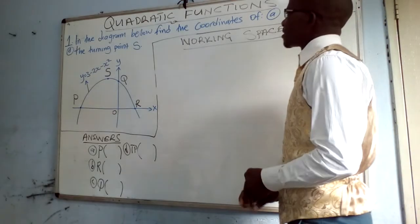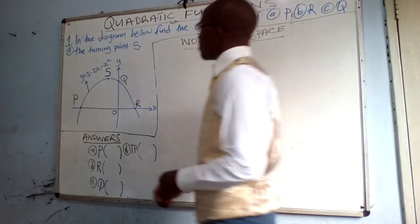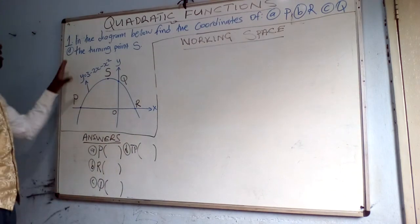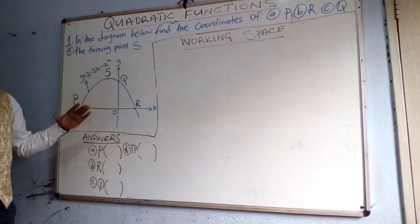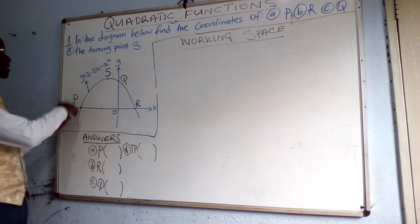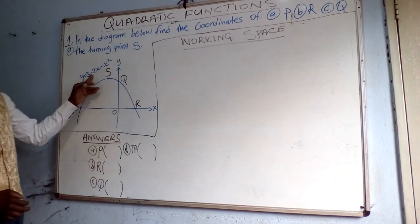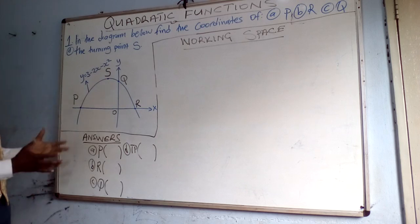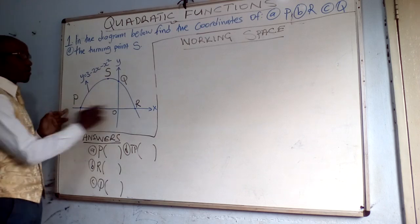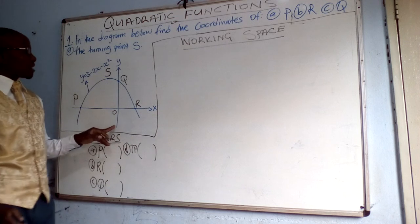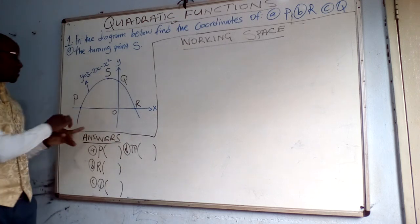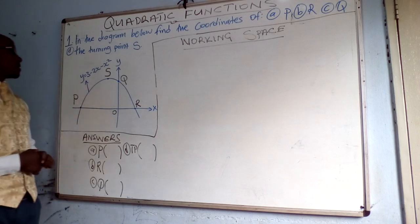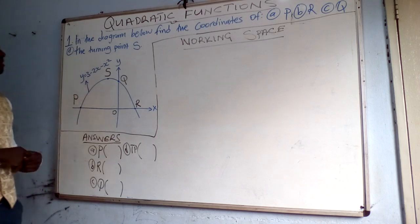Today we are looking at quadratic functions. On the board we have a diagram and then there are questions coming from this diagram. This diagram is a graph of the function y is equal to 3 minus 2x minus x squared. This is our x-axis, this is our y-axis, and then this is the graph that has been plotted out of that function.